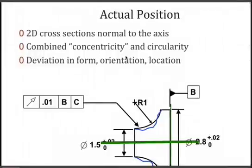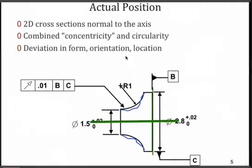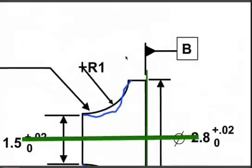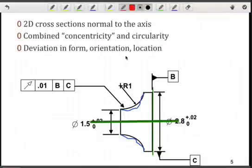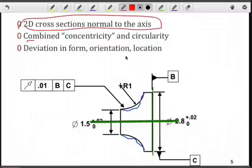So what we'll do when we actually create this surface indicated by the blue deviations along that surface, and we're only looking at this region here, what we're doing with the 2D is trying to control the cross-sections. So the 2D cross-sections will be oriented normal to the axis. And we're going to sort of combine, not exactly, but we're trying to make sure that we have concentricity and circularity.